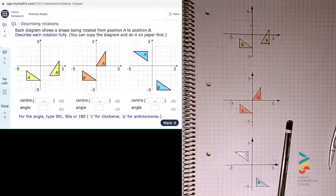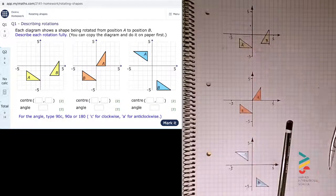We're doing the My iMaths Rotating Shapes Question 1, describing rotations. Each diagram shows a shape being rotated from position A to position B. Describe each rotation fully. You can copy the diagram and do it on paper first, and that's exactly what I've done here.